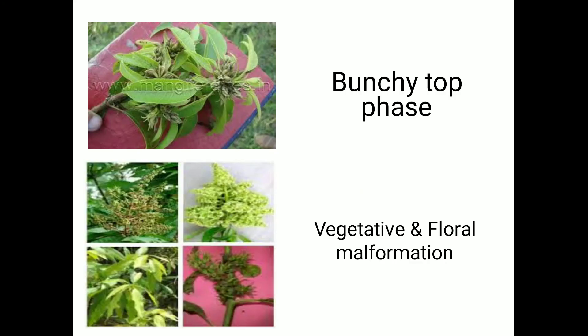In the bunchy top phase, a bunchy appearance is seen at the top. In vegetative malformation, all floral parts are converted into leafy structures only.